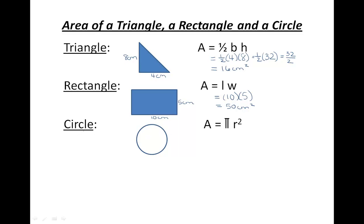Now let's calculate the area of a circle. The equation is area equals pi r squared. Pi equals 3.14, and r represents the radius of the circle. If the radius of this circle is 3 centimeters, let's substitute this number into the equation.